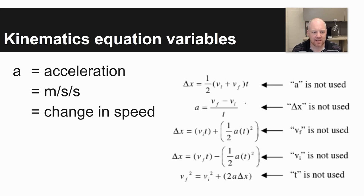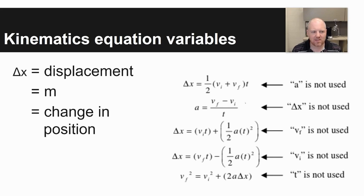Acceleration is measured in meters per second per second. It's represented by the letter A, and acceleration is a change in speed or a change in velocity. Displacement, shown by delta X, is measured in meters. It's like distance, but it's start to finish directly. Change in position.